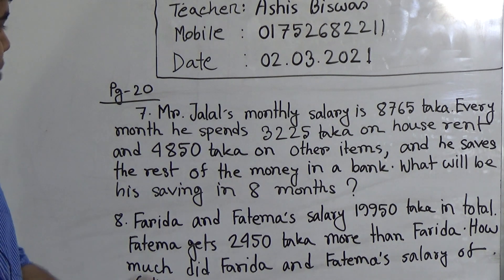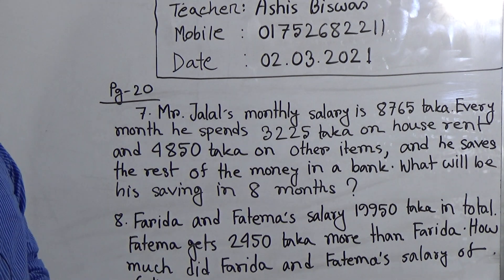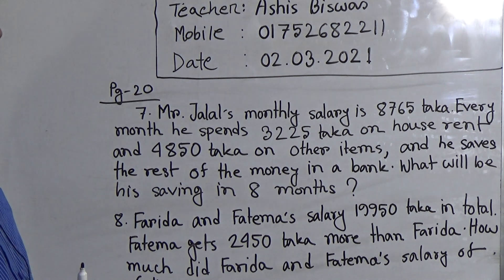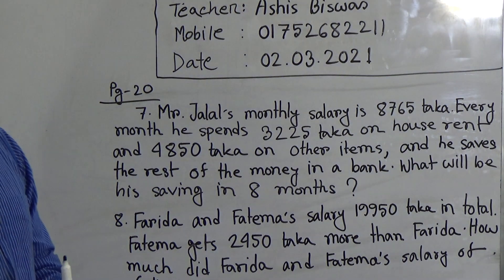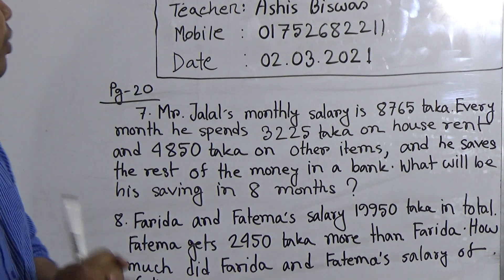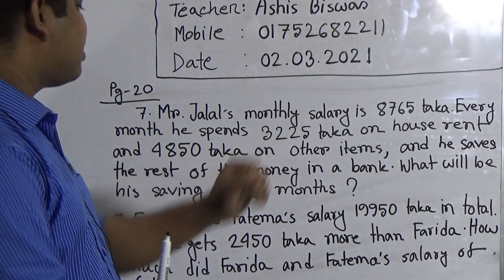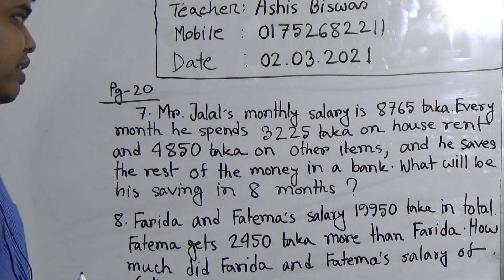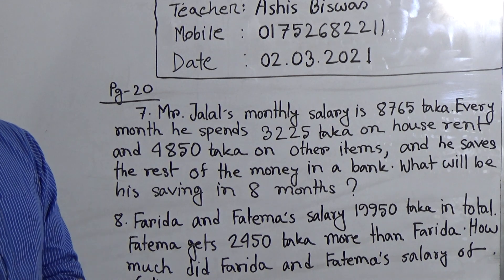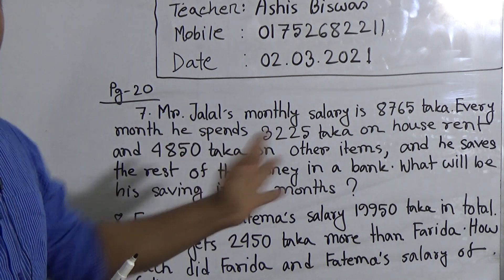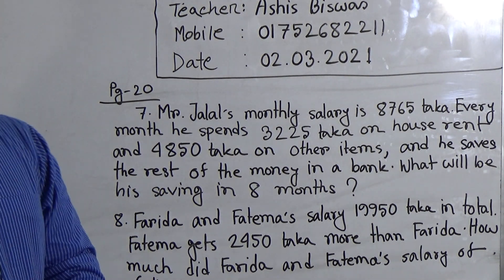In order to make the plan, we read the question again. Mr. Jalal's monthly salary is 8,765 Taka. Every month he spends 3,225 Taka on house rent and 4,850 Taka on other items. First, we find out his total cost — we add 3,225 with 4,850 to get the total cost. Then we subtract the total cost from his monthly salary to get the amount saved in one month. Then in 8 months, we multiply to get the answer.